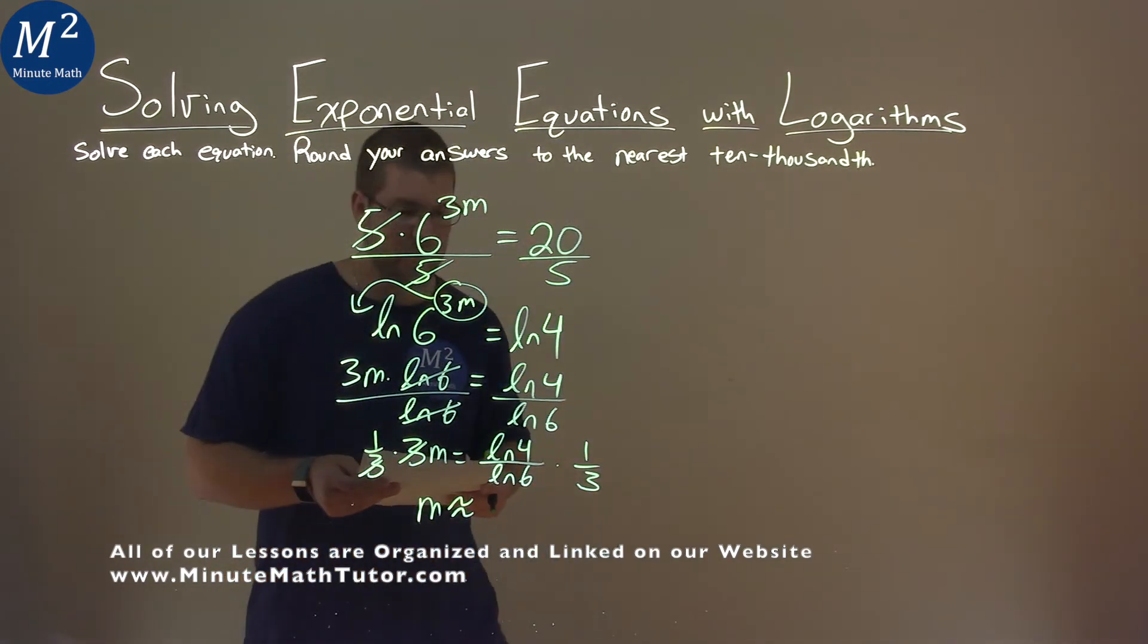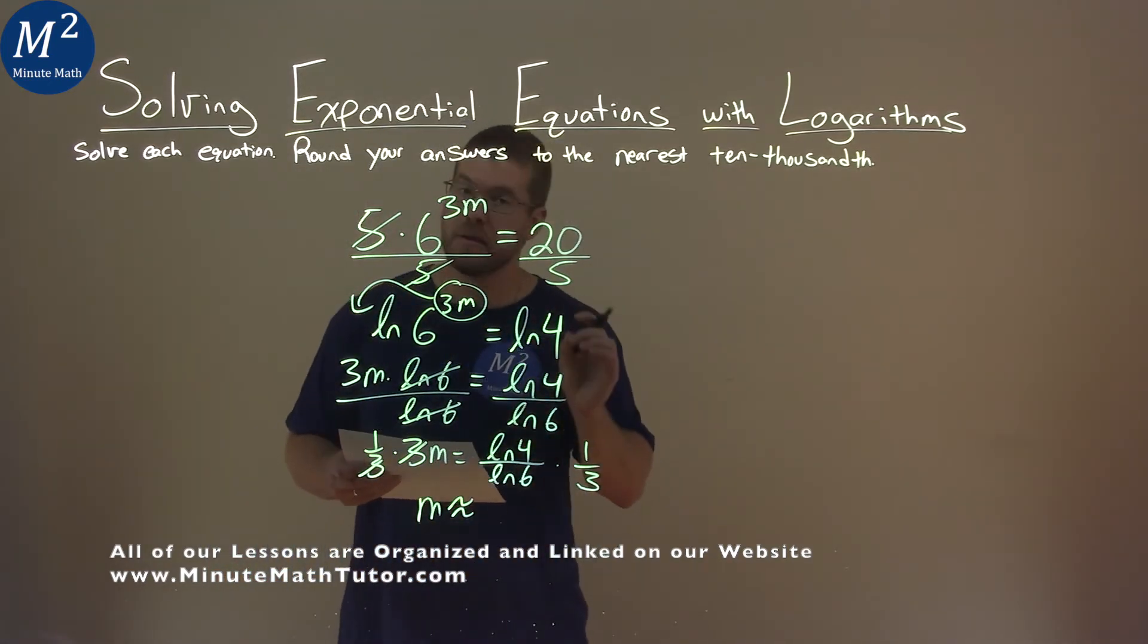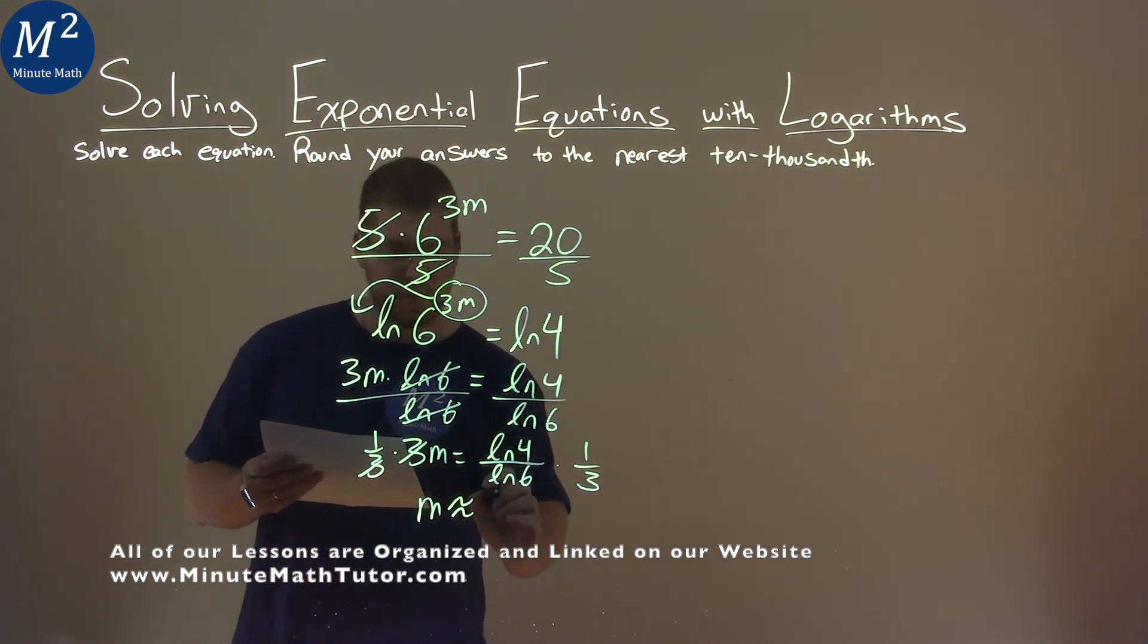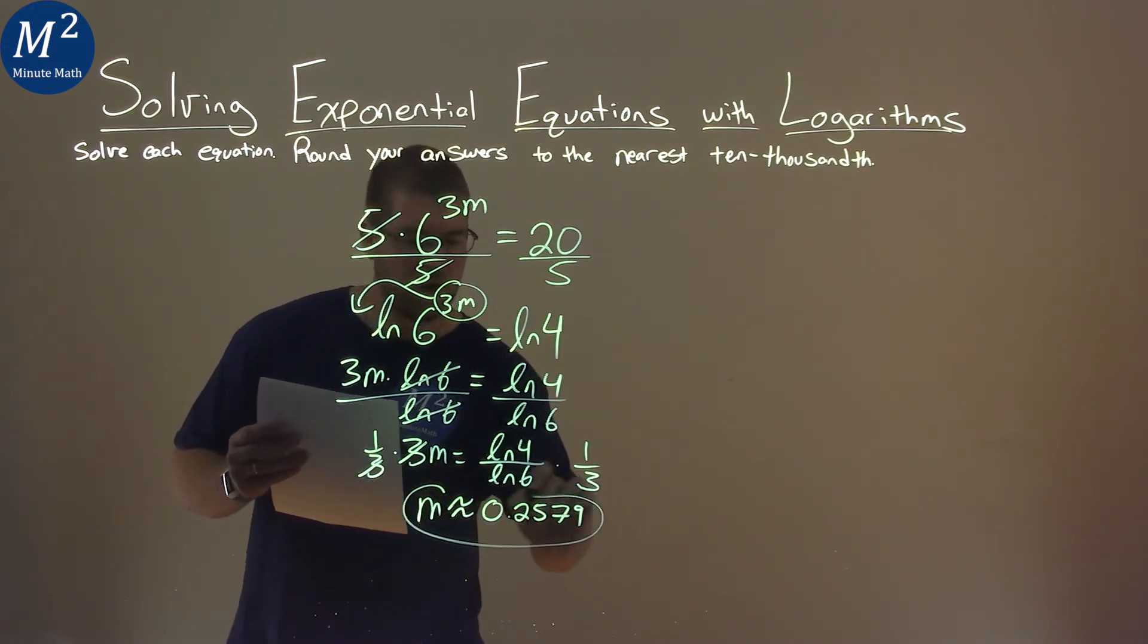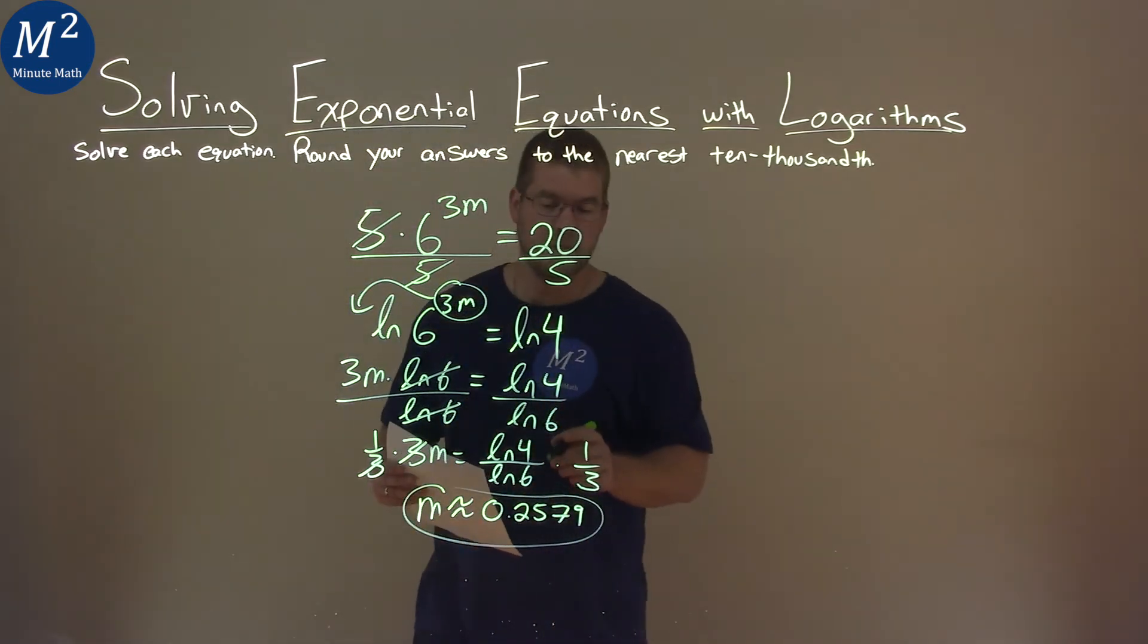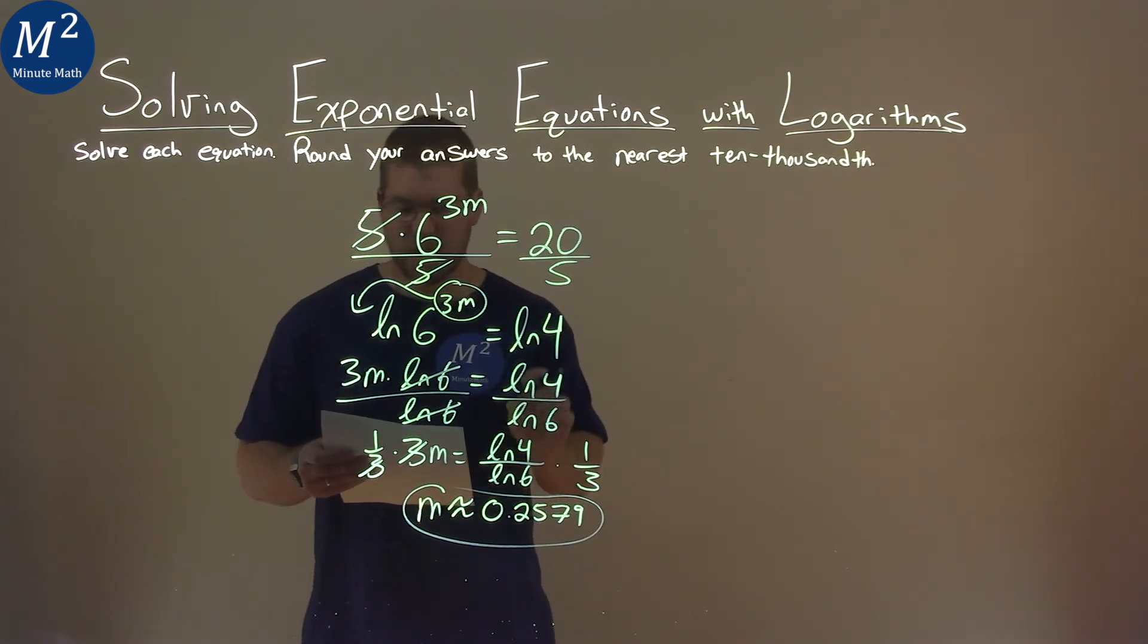Natural log of 4 divided by natural log of 6 times 1 third is an approximate answer of 0.2579. So our final answer here is m is approximately equal to 0.2579.